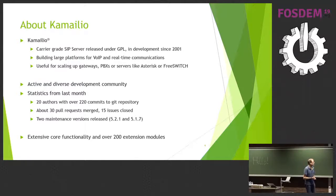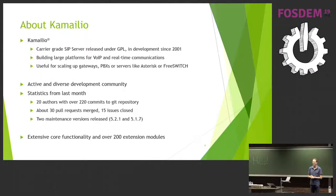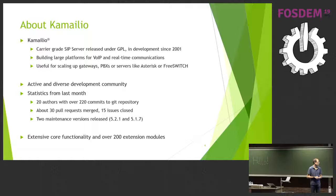We have a really active development community. Yesterday I pulled some statistics from GitHub: in the last month alone, we had over 220 commits from 20 different authors. This shows we are a broad project and open to contributions from everybody. We have a really good process now running with GitHub — we integrated 30 pull requests in the last month, and Daniel did two maintenance versions as well. 5.2 is the current stable branch, and 5.1 is the one before that.